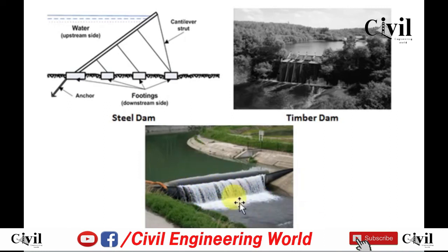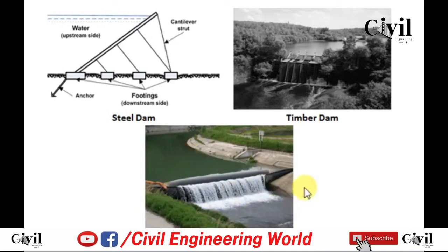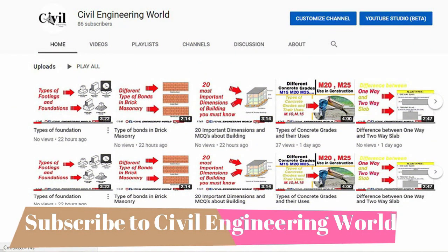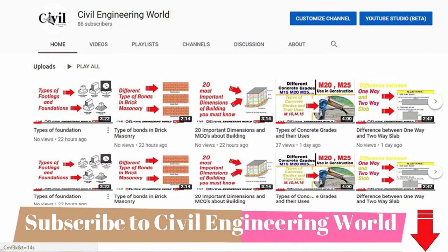In the case of a rubber dam, water is raised by using synthetic rubber materials placed perpendicular to the water flow, and thus the water on the upstream can be easily raised. Hope you have learned from this video — don't forget to subscribe to our channel Civil Engineering World and click the bell icon to get the latest videos.